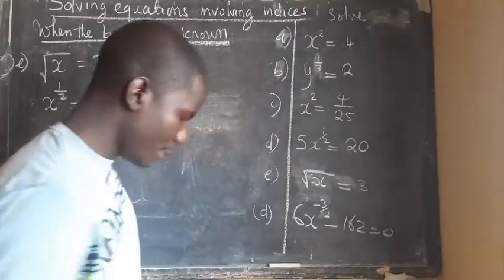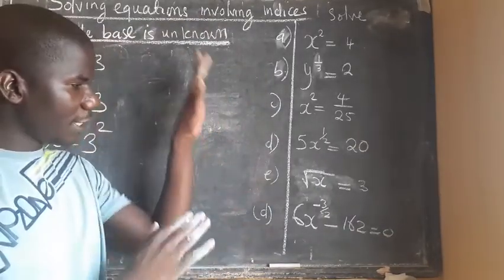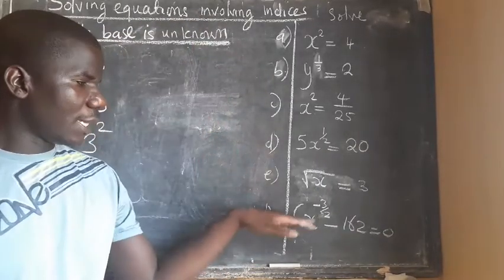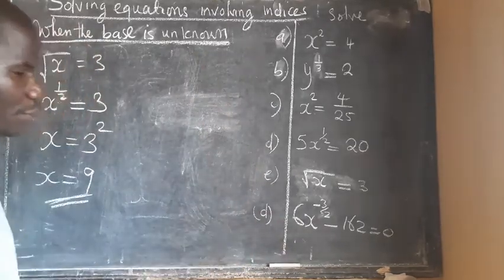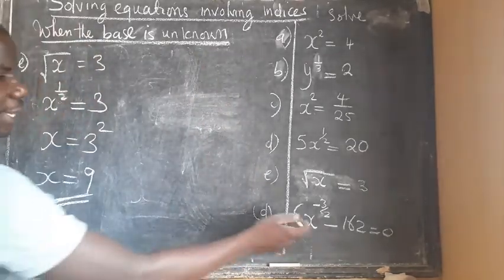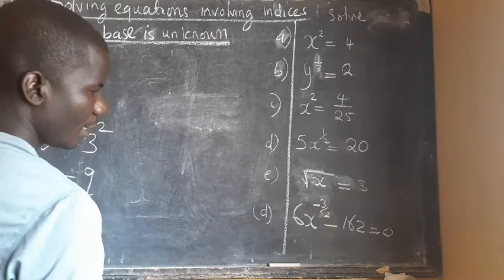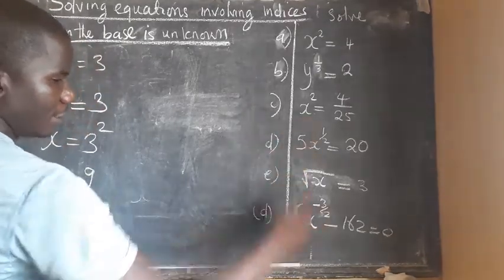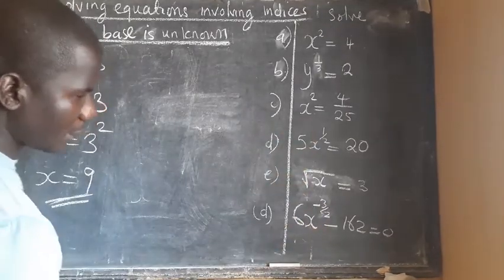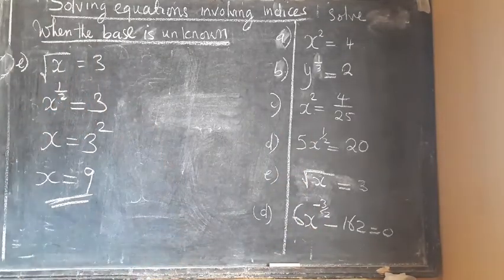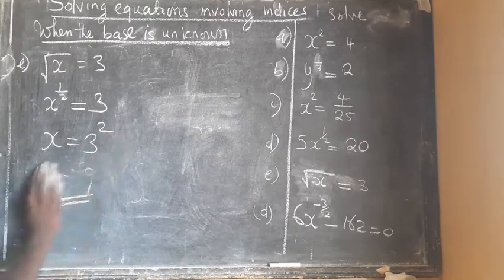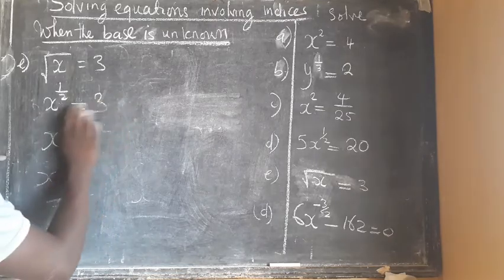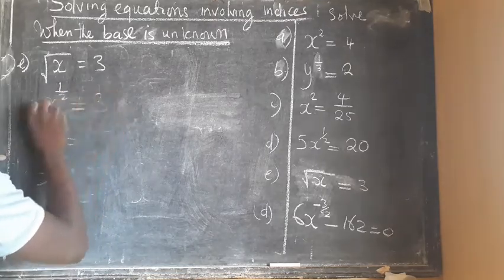For those following these lessons in order, I had mistakenly placed this example in a previous lesson where the indices were the known quantities. It has now come into its correct subtopic where it is supposed to be covered.